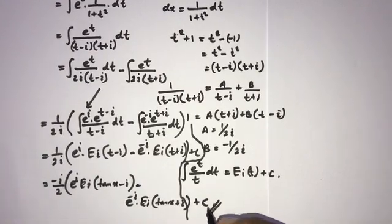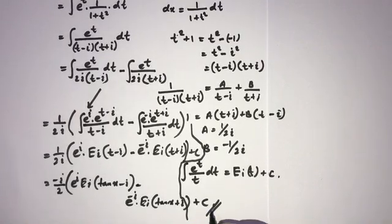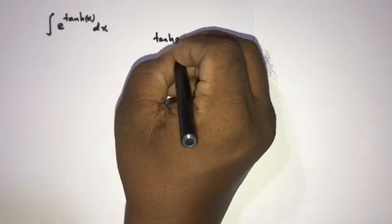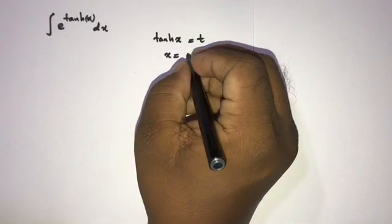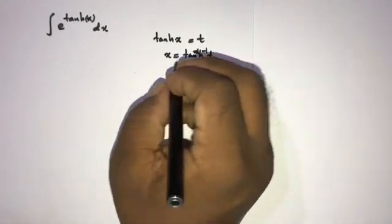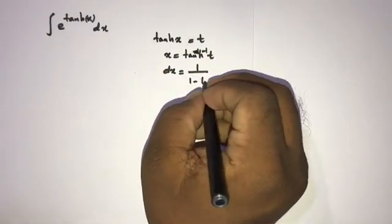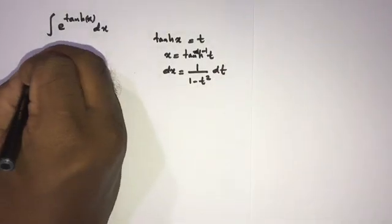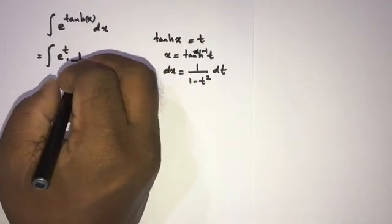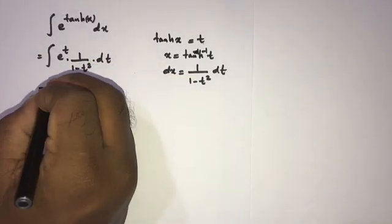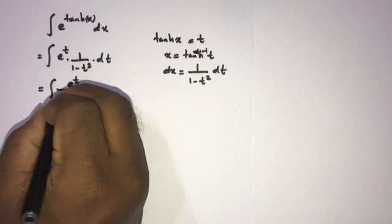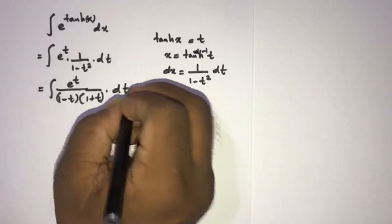Now we are going to evaluate the integral of e to the hyperbolic tan of x dx. Again we use substitution method. If we take hyperbolic tan of x equal to t, then x equals inverse hyperbolic tanh of t, and differentiating gives dx equal to 1 over (1 minus t squared) dt. Plugging in: e to the hyperbolic tan(x) becomes e to the t, and dx is 1 over (1 minus t squared) dt.